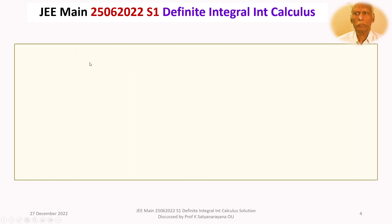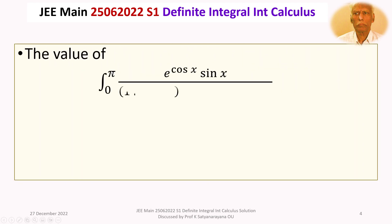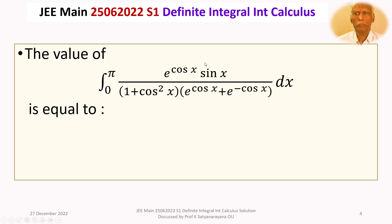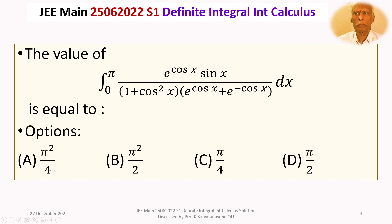The given question is: find the value of the integral from 0 to pi of e^(cos x) multiplied by sin x, divided by (1 + cos²x) multiplied by (e^(cos x) + e^(−cos x)), with respect to x. The four options are: (a) π²/4, (b) π²/2, (c) π/4, (d) π/2.